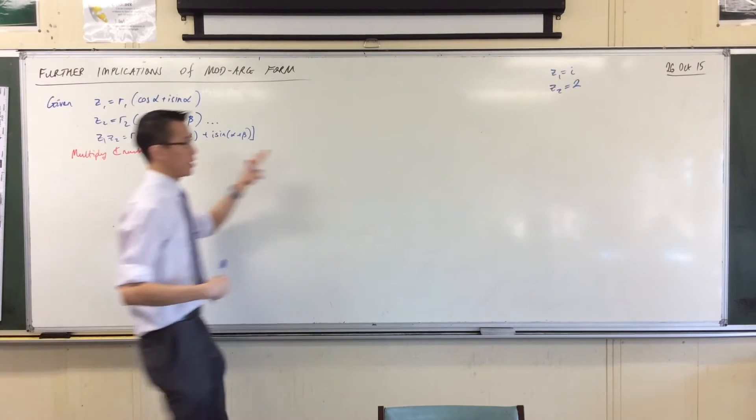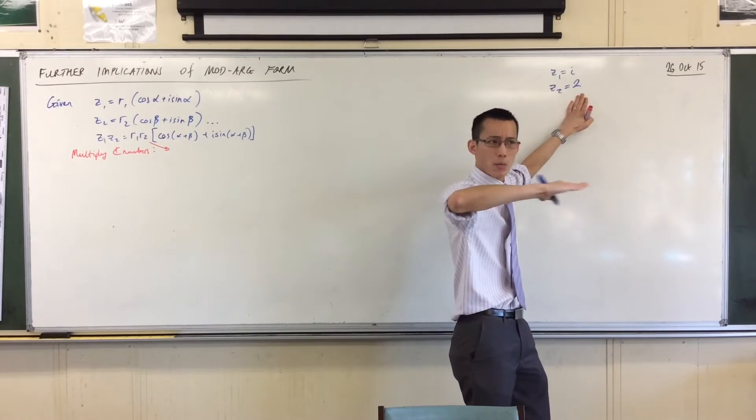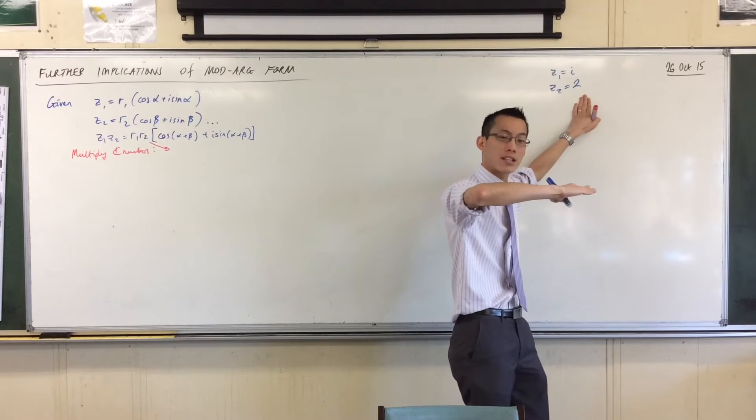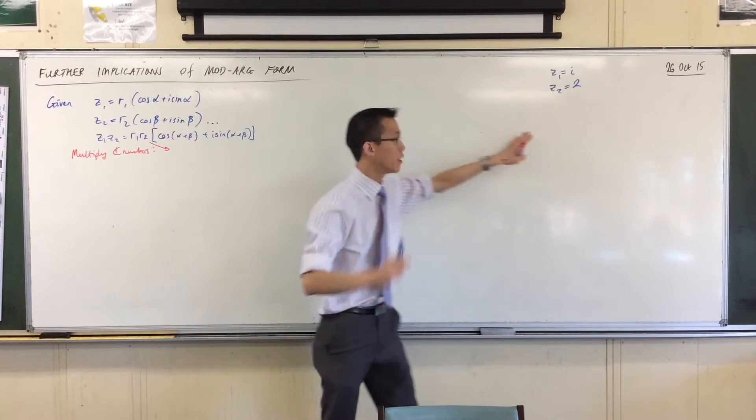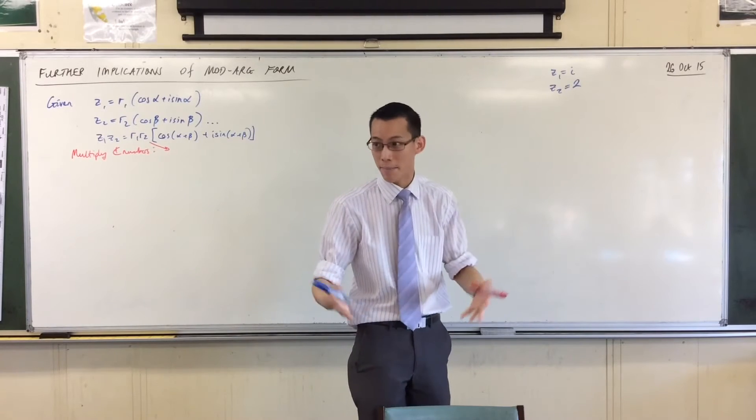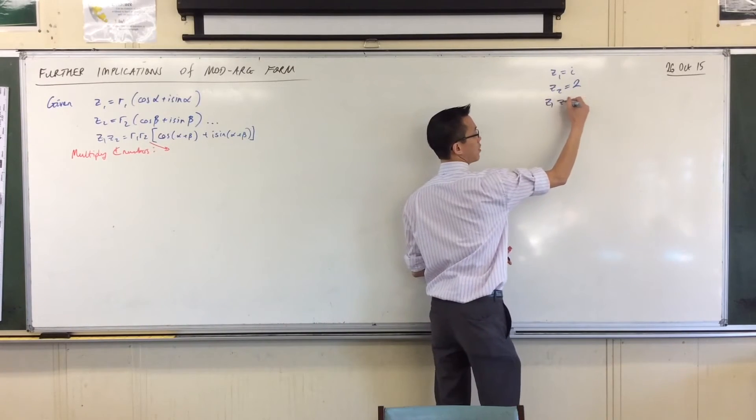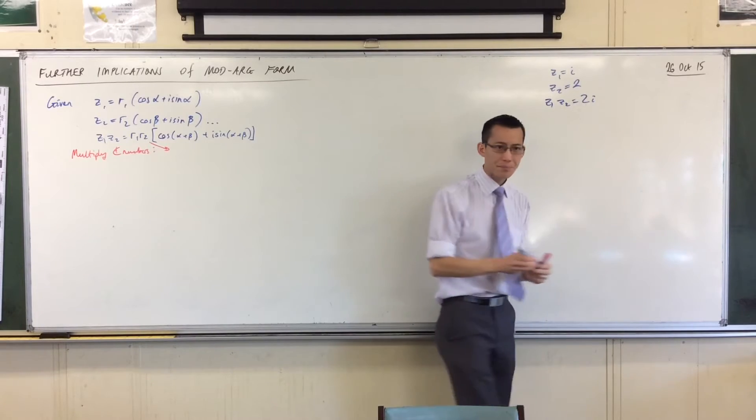Where is 2? 2 is right there on the real axis, or the positive real axis I should say. So its argument is zero. Now there's the rotation thing happening, or as it is not happening. But what else happens to it?